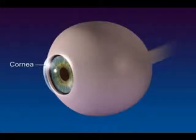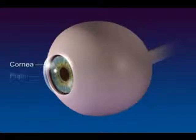The cornea is a clear, circular area within the sclera where light enters the eye.